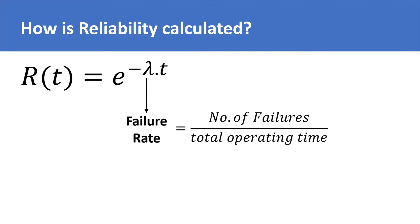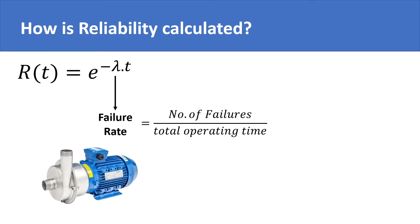For example, if the historical maintenance logs of an industrial pump show that it suffered 10 failures in 10,000 hours of operation, its failure rate would be 0.001.